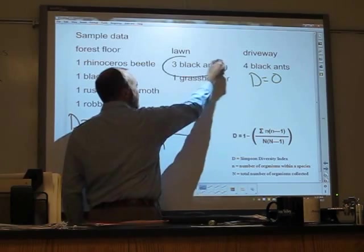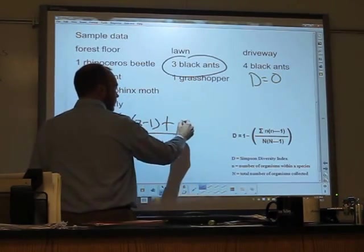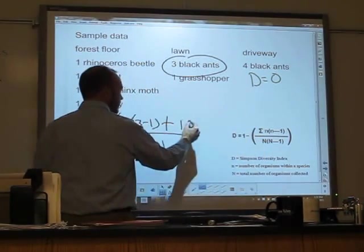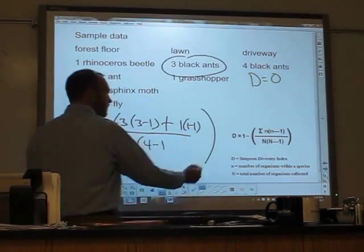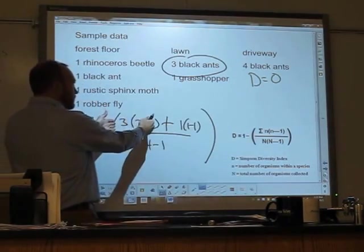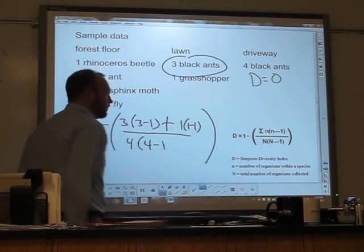the sum means I have to add this up for each organism. So I've done it for black ants, but now I have to add for grasshoppers. So that's one. N for the grasshopper is one, times one minus one. So this sigma means I add them up. So here's n times n minus one for black ants. Here's n times n minus one for grasshoppers.